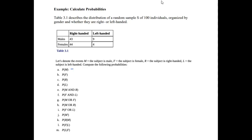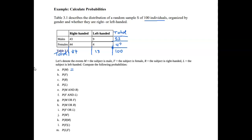We want to calculate several probabilities. First, the probability of picking a male out of the group of 100 individuals. With contingency tables, it's good to fill in totals on the sides. Adding 43 plus 44 gives 87 total right-handed people; 9 plus 4 gives 13 total left-handed people; 43 plus 9 gives 52 total males; and 44 plus 4 gives 48 total females.